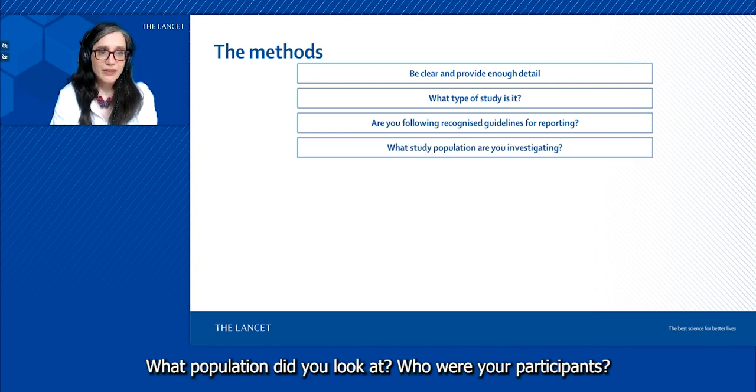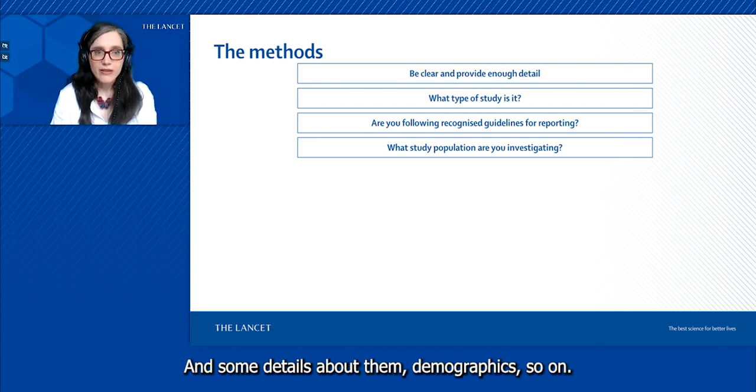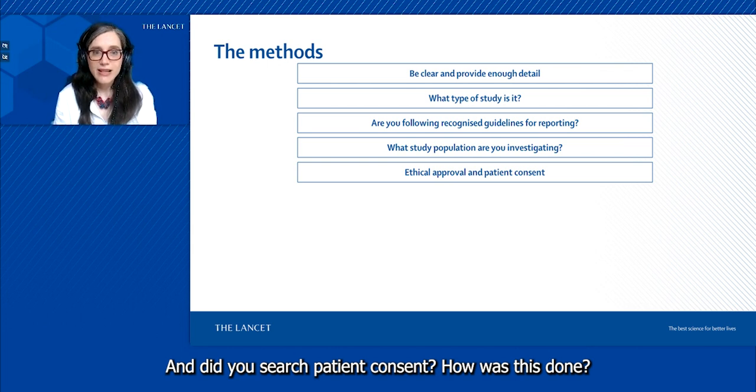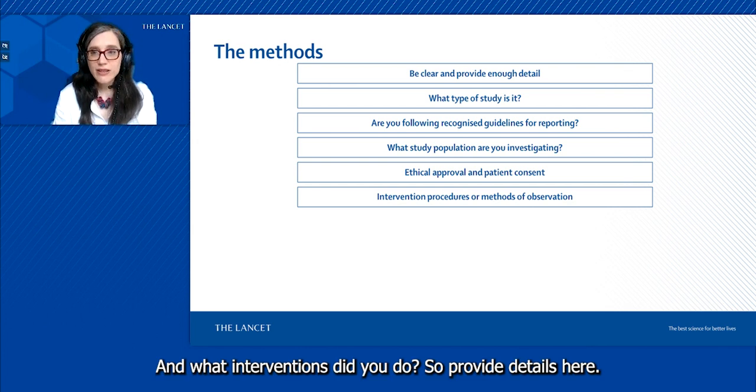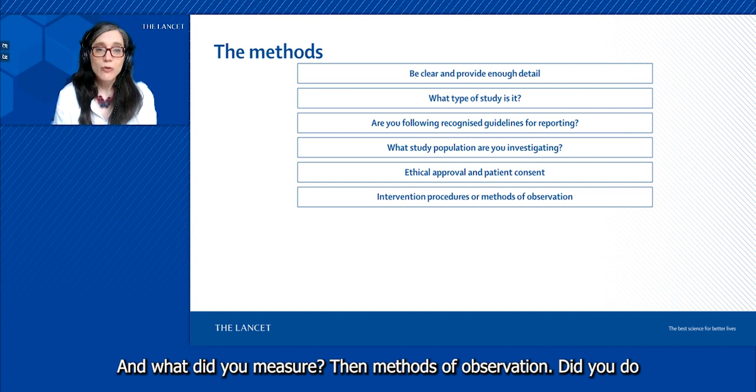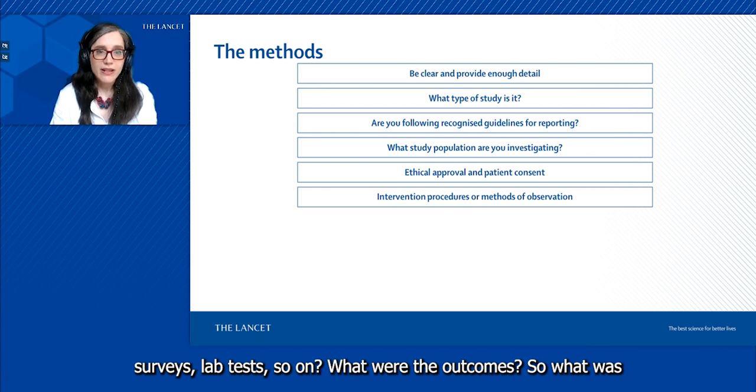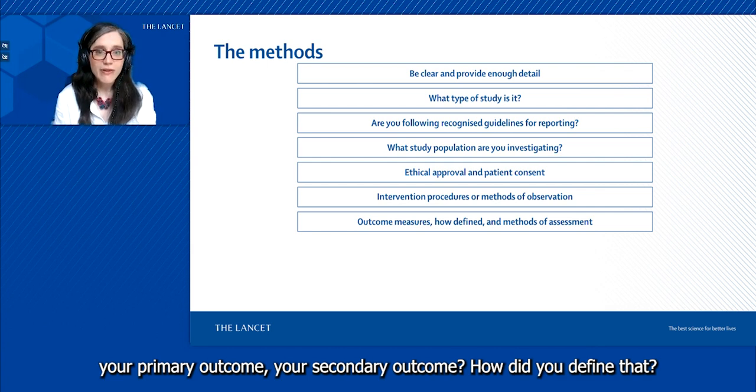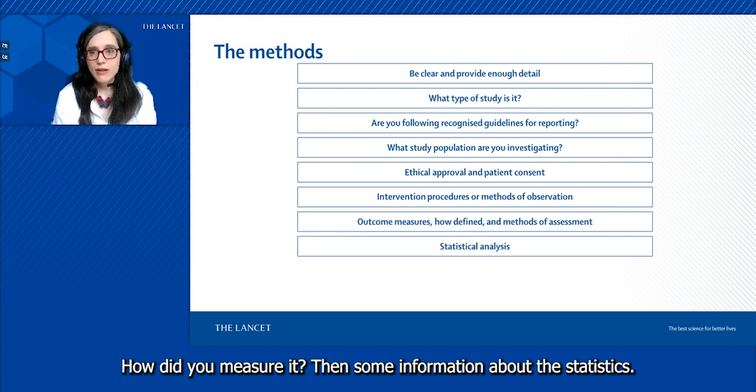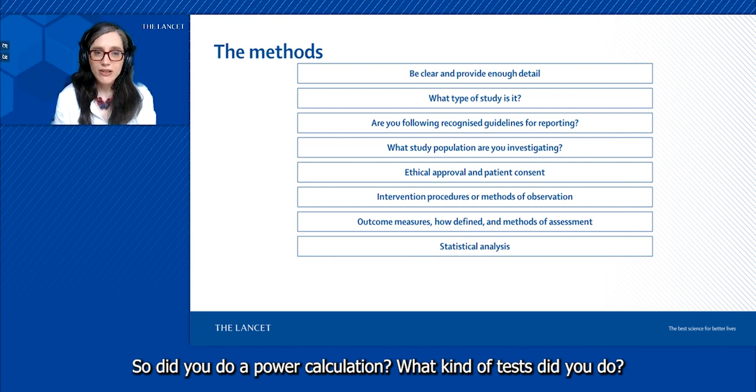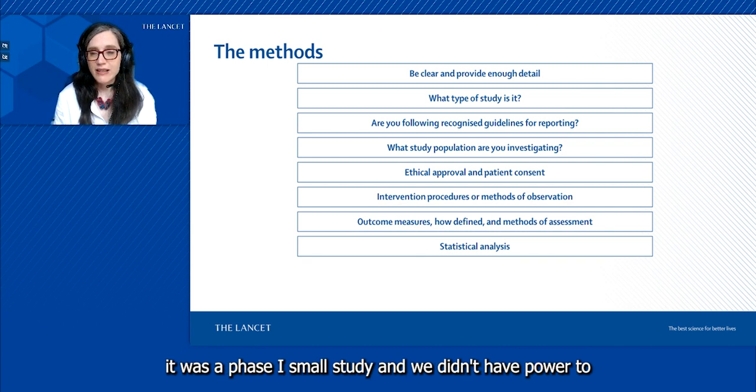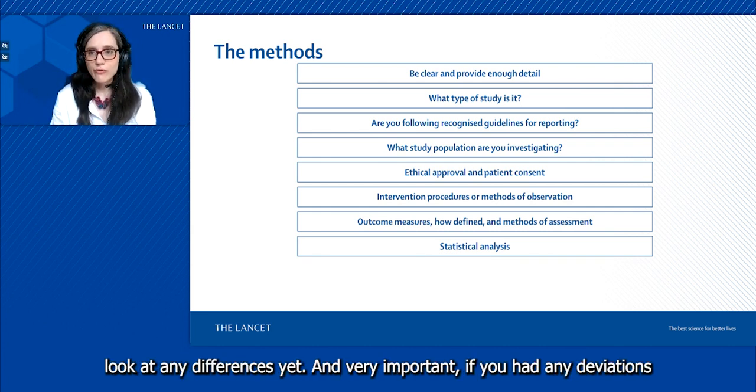You should say what type of study did you do—did you do a randomized controlled trial, did you do an observational study? Are you following any kind of guidelines? What population did you look at? Who were your participants and some details about them, demographics and so on? Did you have ethical approval? Who gave you the approval, and did you obtain patient consent? How was this done?